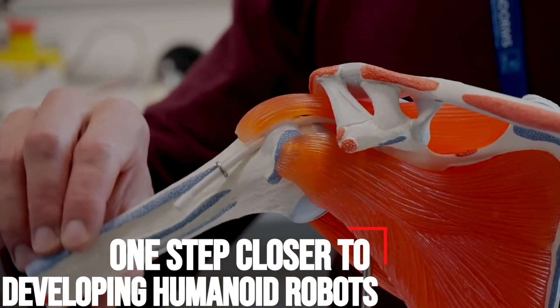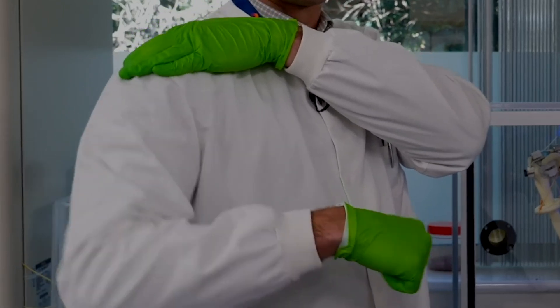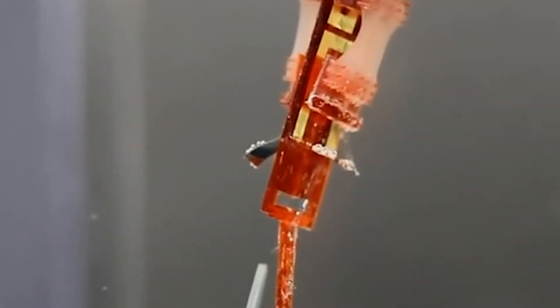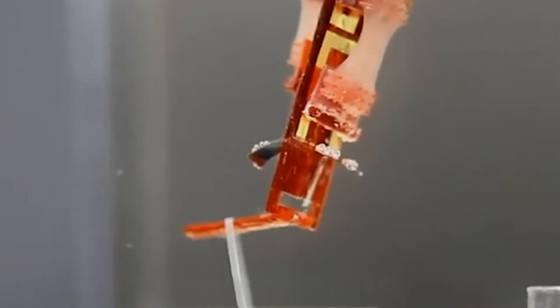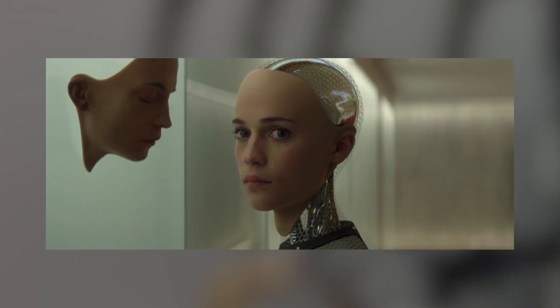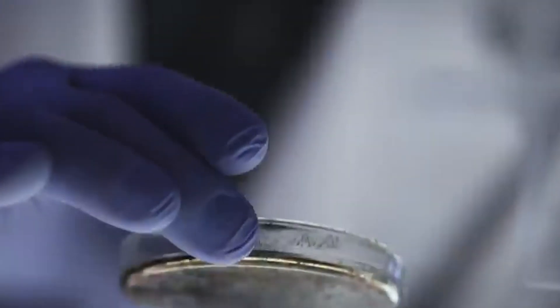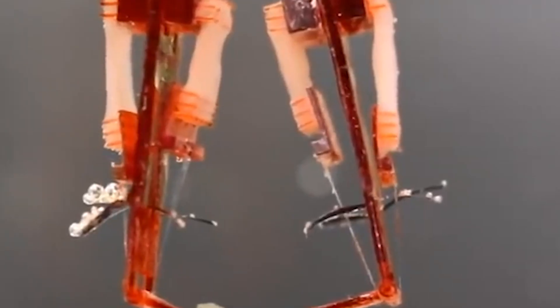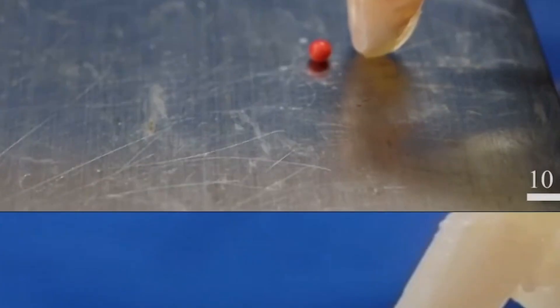One Step Closer to Developing Humanoid Robots. A way of covering a robotic finger with living human cells has been developed by Japanese scientists. It may sound like something from the realms of sci-fi classics, such as Blade Runner or Ex Machina, but researchers at the University of Tokyo are bringing androids a major step closer by grafting living human skin on robots. The method not only gave a robotic finger a skin-like texture, but also provides water-repellent and self-healing functions. Study First author Professor Shoji Takeuchi said, The finger looks slightly sweaty straight out of the culture medium.